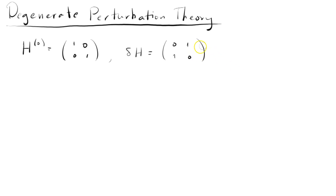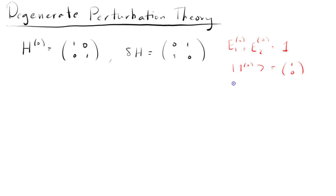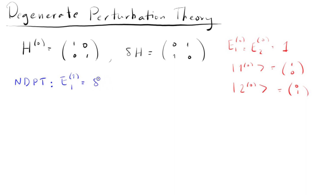So as I said, E1 equals E2 — the unperturbed energies — and it's just equal to 1. Our first eigenstate is just [1, 0] and our second eigenstate is just [0, 1]. These are just the eigenvectors of our unperturbed Hamiltonian. Now let's say we want to compute our first order energy corrections using non-degenerate perturbation theory. The first order correction E1_1 would just be equal to the matrix element δH_11.